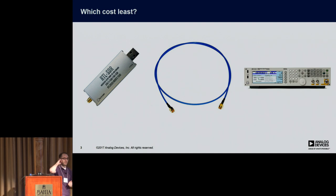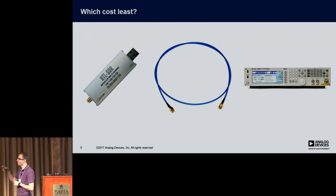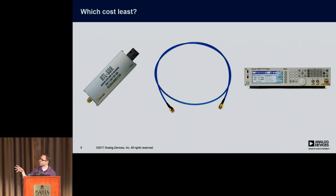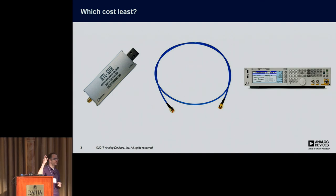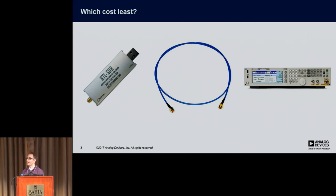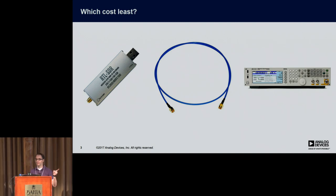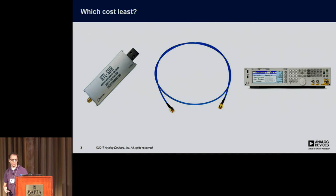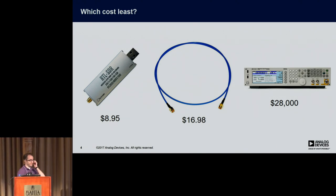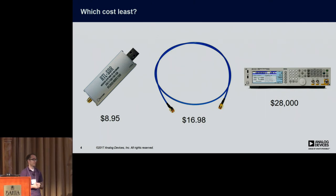Maybe an easier question: which is cheaper? A Keysight MXG signal generator with arbitrary waveform capability, an SMA cable that's half a meter long, or an RTL? When we bought these, the RTL was half the price of the cable, which is crazy. So we're in this really interesting world now where our SDRs are affordable.